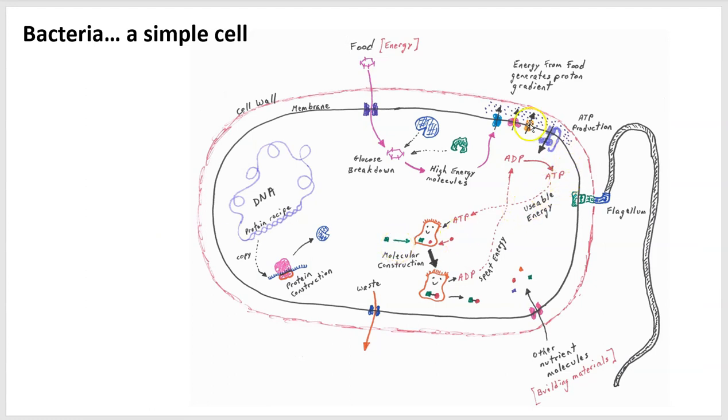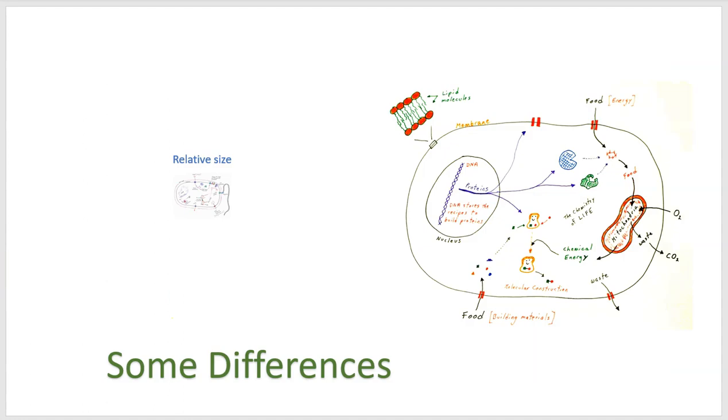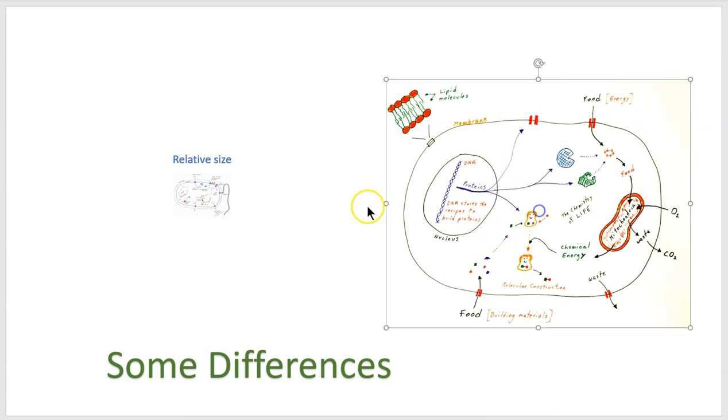Now, there are lots of structures inside the cell that you might be familiar with. So let's take a moment to look at some similarities and differences between these two kinds of cells. First, a notable difference is the relative size. So again, the amoeba, paramecia, or an animal cell is considerably larger than the bacterium.